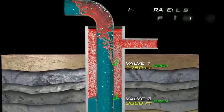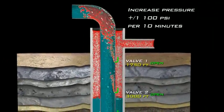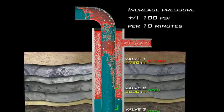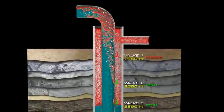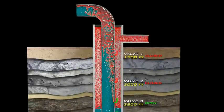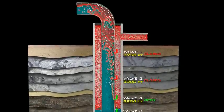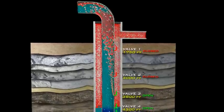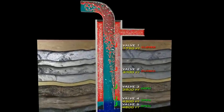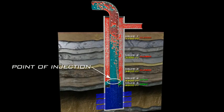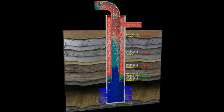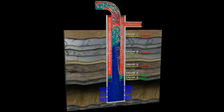As the fluid continues to unload below the next valve, the gas injection transfers to that valve. The annular pressure decreases and the top valve closes. Each lower valve stays open until it becomes the gas injection point. As this happens, the valve above it closes. The transfer of gas injection continues downward until the point of injection is reached. During this process, both the tubing pressure and the flowing bottom hole pressure continually decrease, which increases the well's production rate.